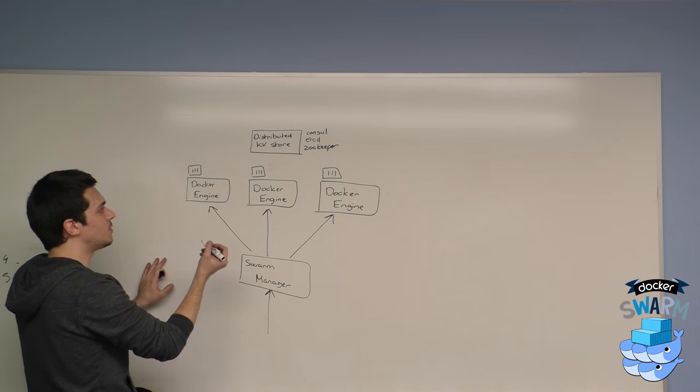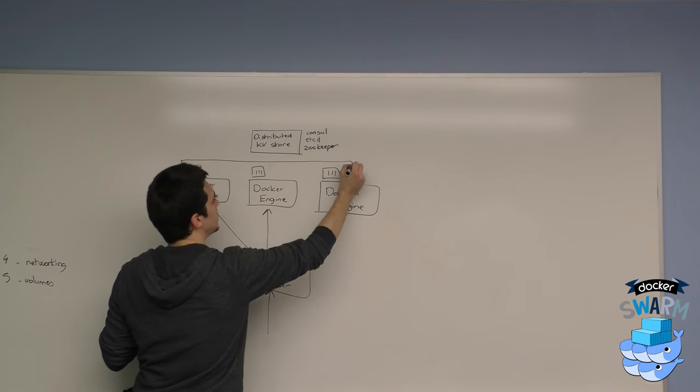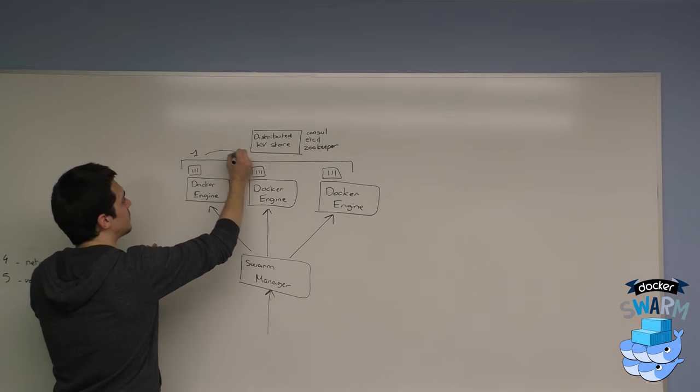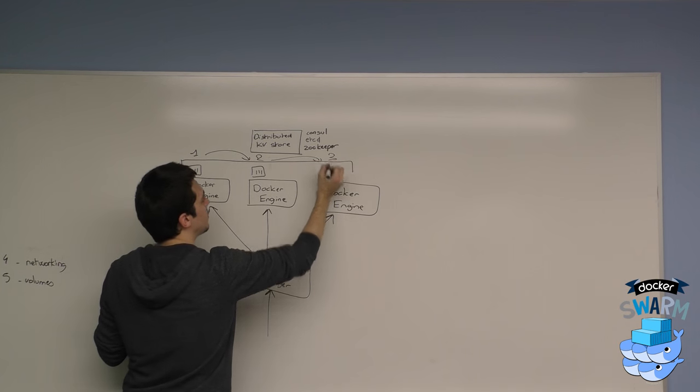For example, if I create an overlay network across my host, I can bind all those containers together to make sure that service 1 here will be able to discover service 2 here and service 3 here.